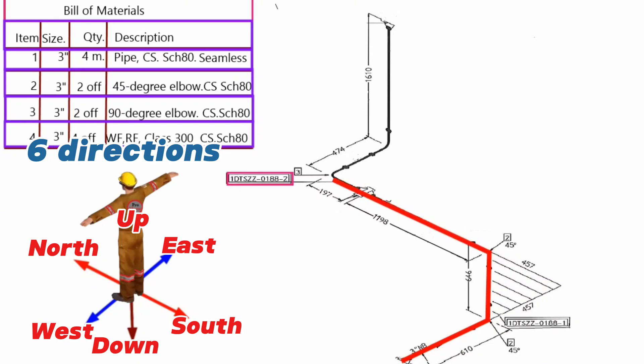Then, pipeline turns to eastwards again with a 90-degree elbow. At last, the pipeline turns to the upwards at angle 90-degree elbow.